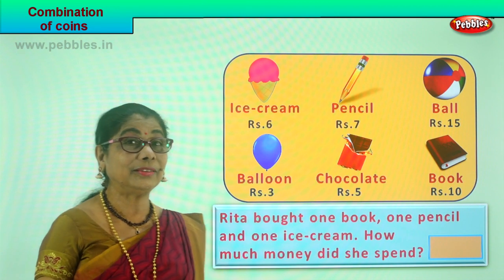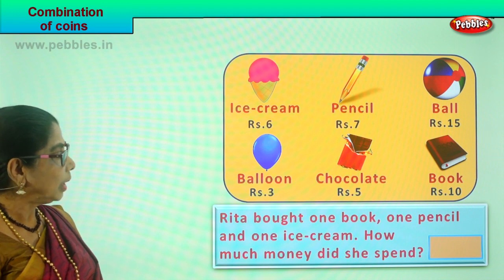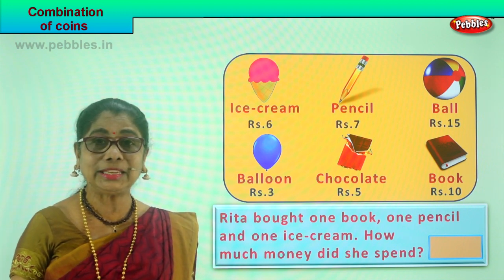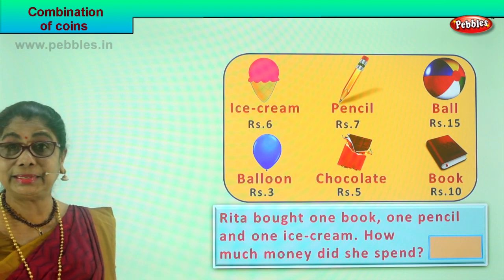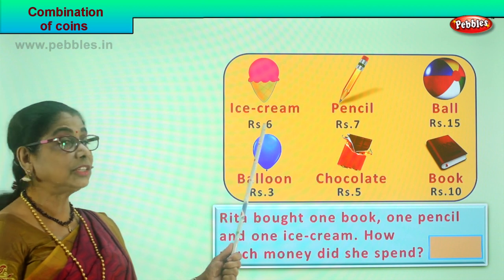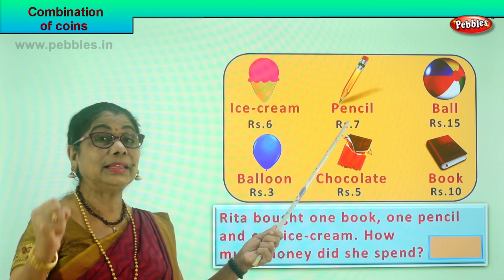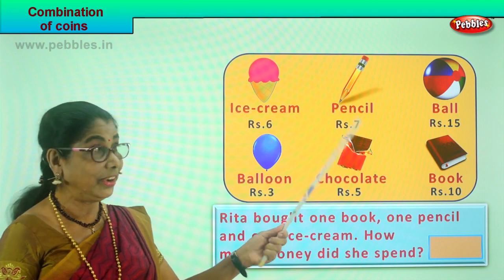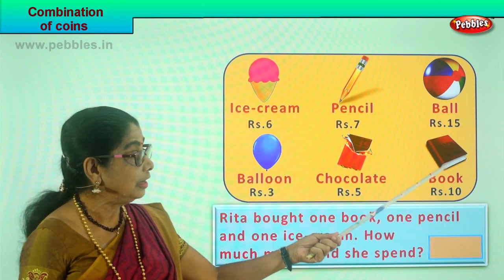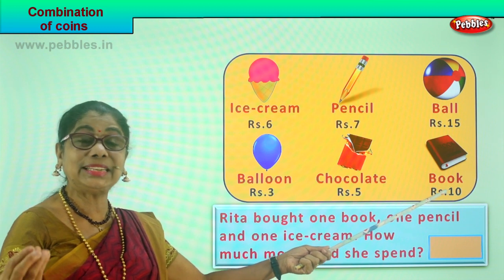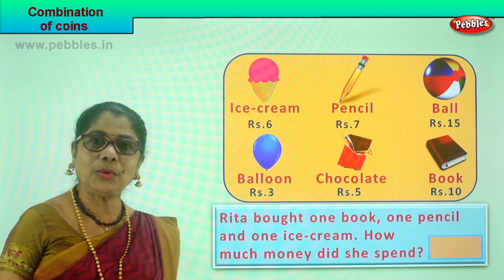Now Rita is going shopping. Mum is giving lots of coins into a little purse. We have an ice cream for six rupees — a five rupee coin plus one rupee coin. A pencil is seven rupees — a five rupee coin and a two rupee coin. A ball is fifteen rupees — ten rupees plus five rupee coin. A book for ten rupees — a ten rupee coin. A chocolate for five rupees, and a balloon for three rupees. Let's see what Rita would like to buy.